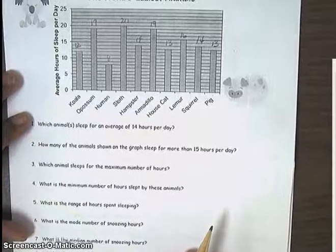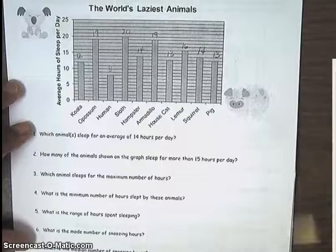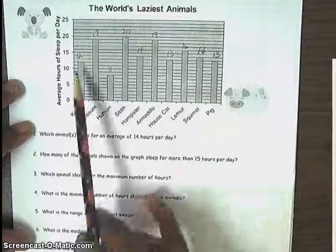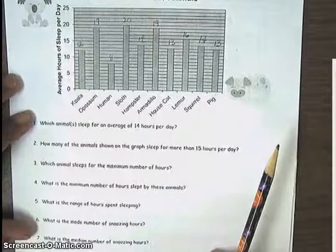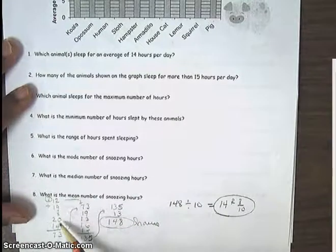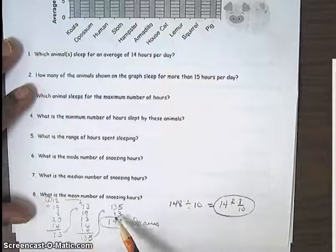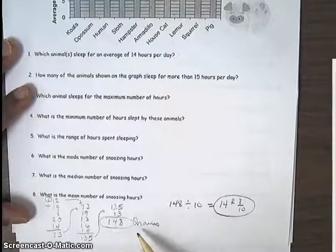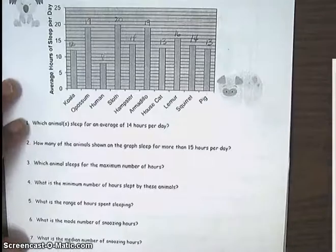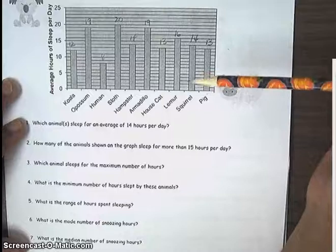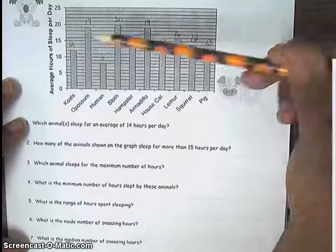Now all of you understand that the first step to finding the mean is to take your data and to add all of this data together, and so we will have our sum. And so that is what I've done. I have taken the 12, 19, 8, 20, and on and on until I added all of this data together, and I came up with 148 hours. Then the second part of finding the mean is to divide that sum by the numbers, the number of numbers that you have in your data set.